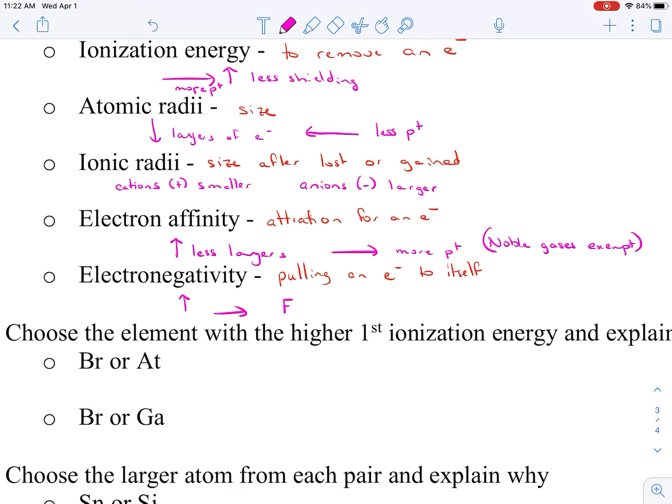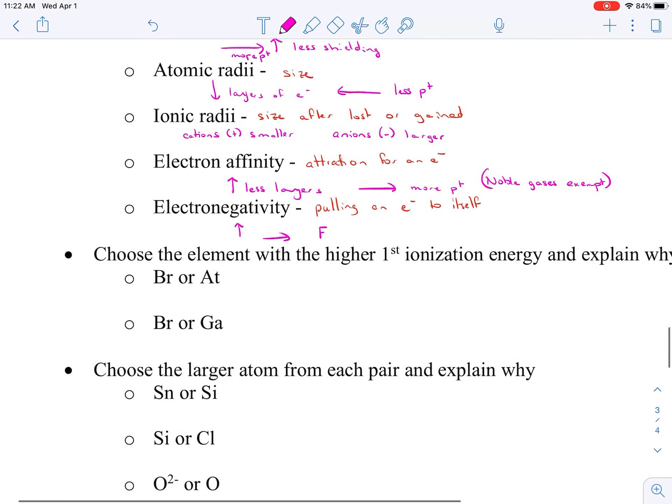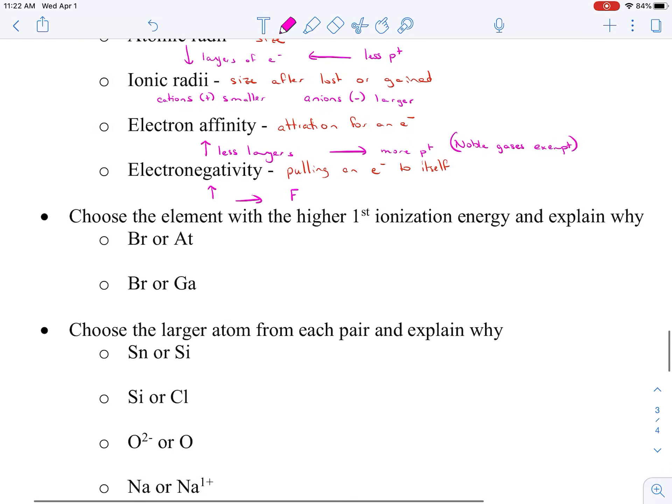Let's see if we can't work a few of these. We're choosing the element with a higher first ionization energy and explaining why. So we have bromine and astatine. Bromine is number 35, astatine is number 85. They're in the same column or the same family. Which one will have a higher first ionization energy? We're going to say bromine, and why is that? That's because it has less shielding.